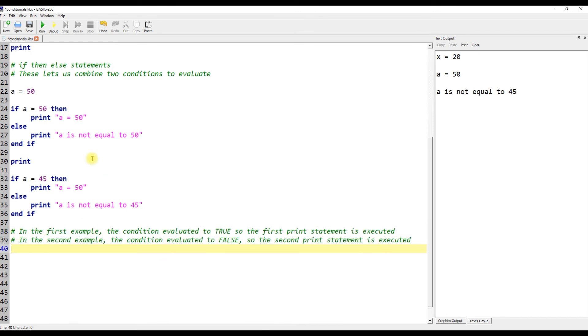In the first example, the condition evaluated to true, so the first print statement is executed. In the second example, the condition evaluated to false, so the second print statement is executed.